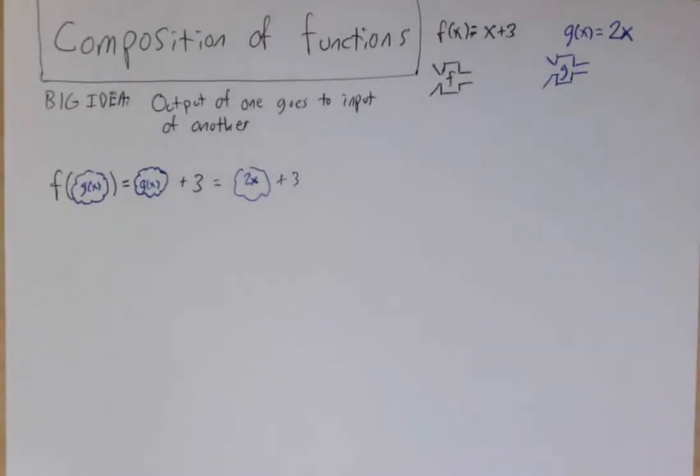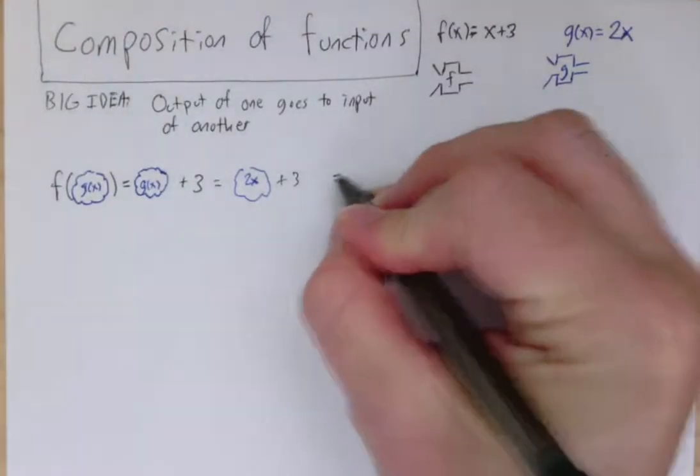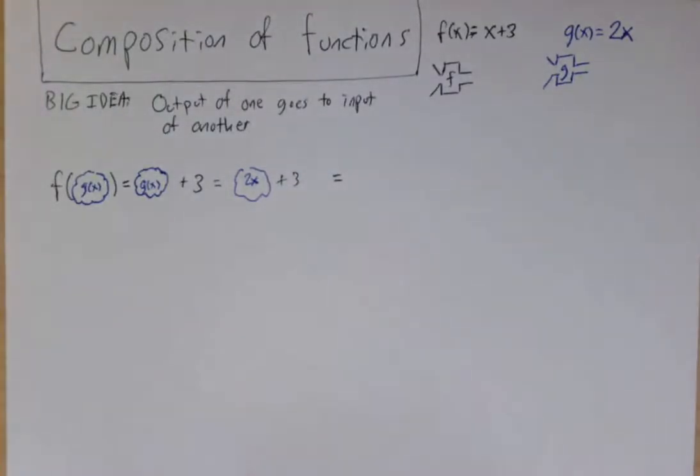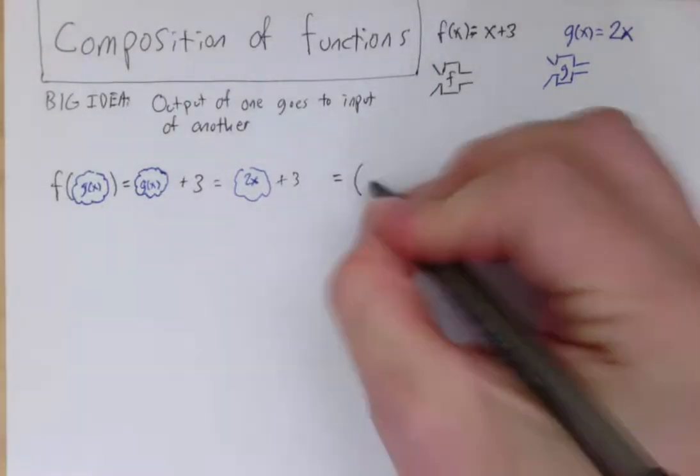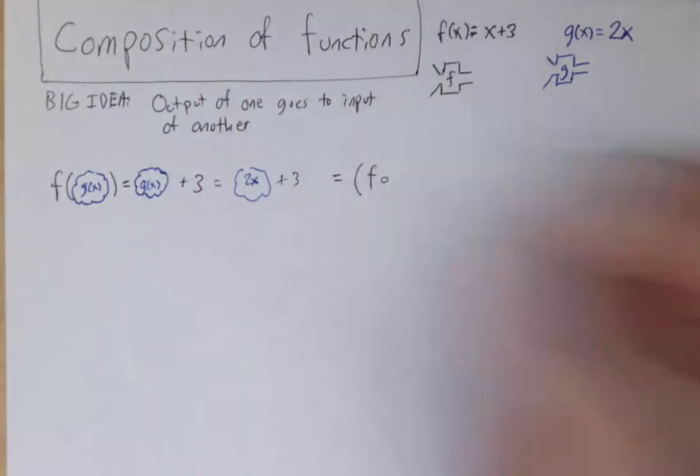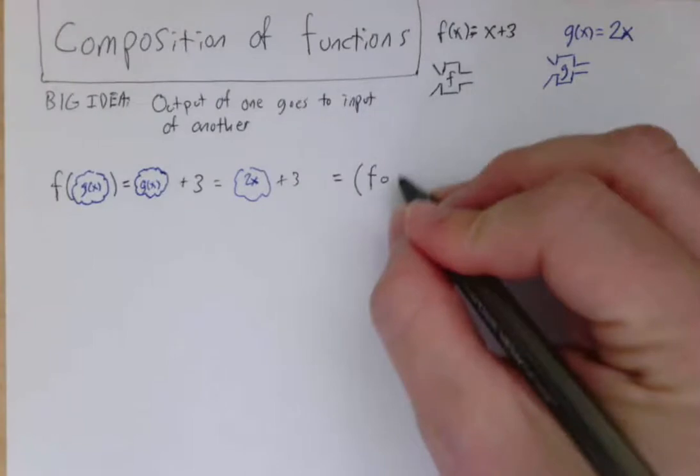So the only algebraic thing that might be new for you here is a different way of writing this down, a different way of notating it. So rather than saying f of g of x, you can write it this way, f, and then a little tiny circle representing of, and then g.